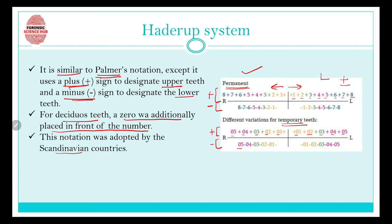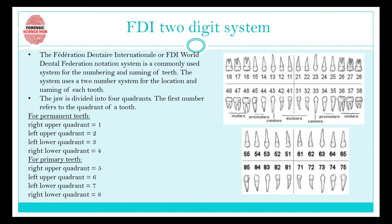Now let's talk about the FDI system — a two-digit system. FDI stands for Fédération Dentaire Internationale, also known as the FDI World Dental Federation notation system. It is commonly used for numbering and naming teeth throughout the world. The system uses two numbers, hence the name 'FDI two-digit system,' for the location and naming of each tooth.